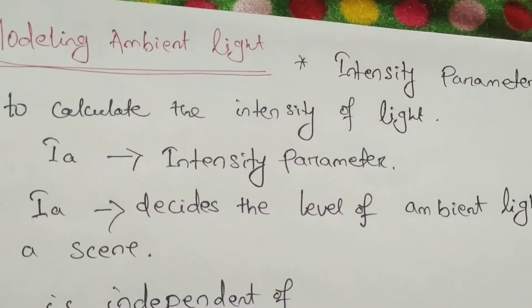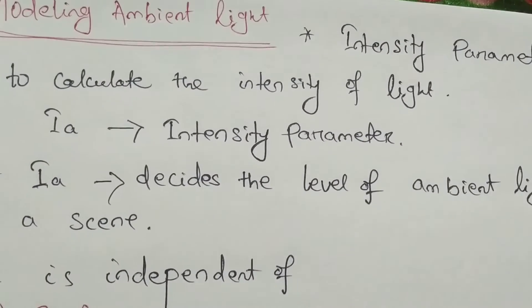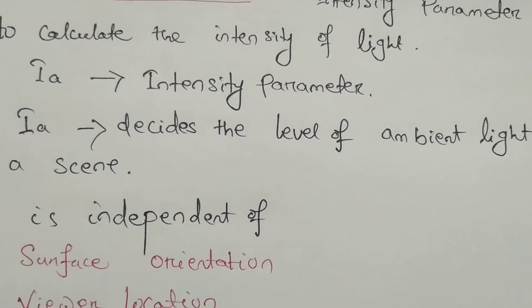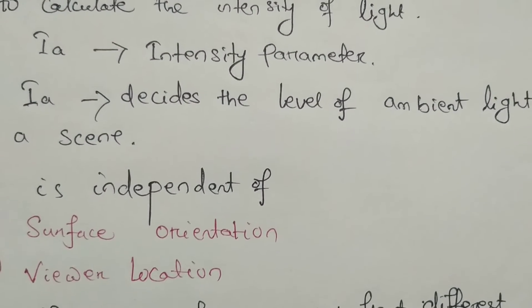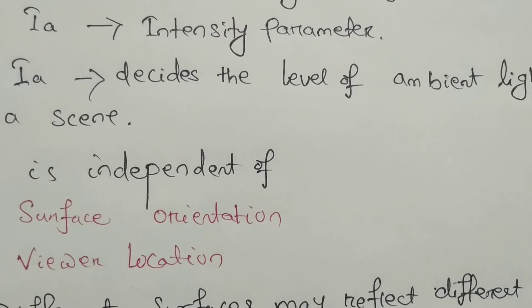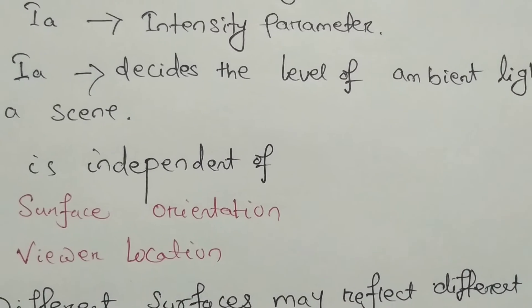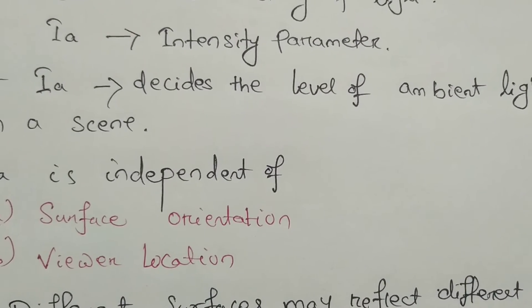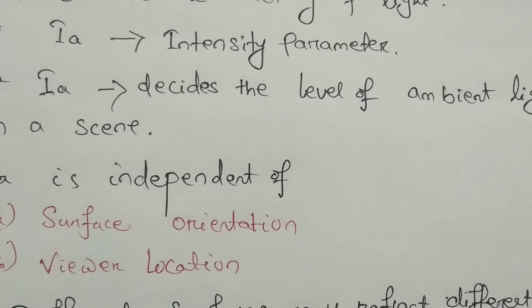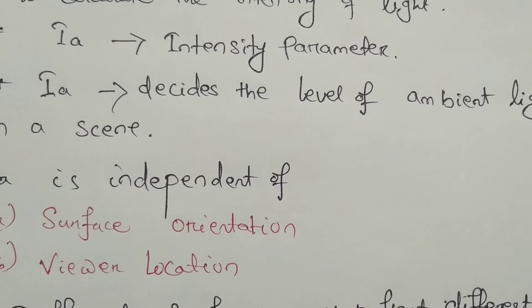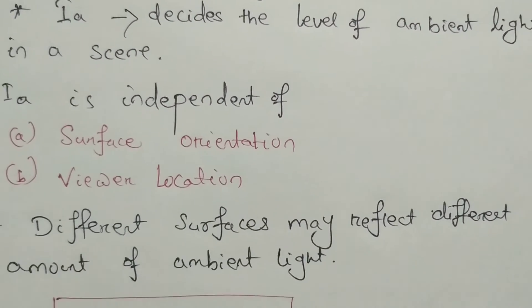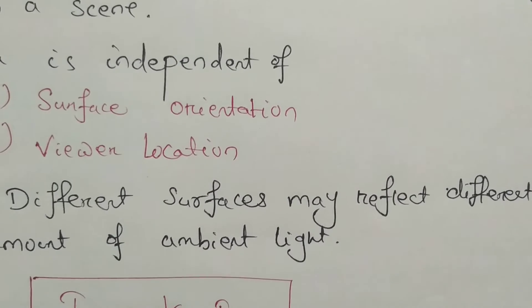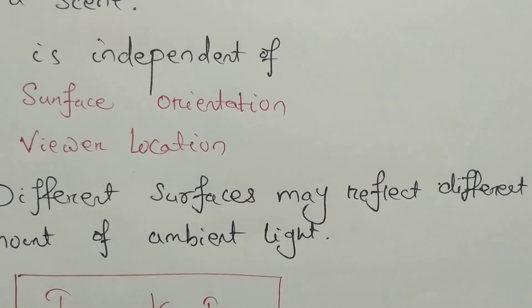Modeling ambient light: an intensity parameter is used to calculate the intensity of light, represented by Ia. Ia decides the level of ambient light in a scene. Ambient light is always independent of surface orientation — whatever may be the surface, shiny or clay — and of viewer location. Different surfaces may reflect different amounts of ambient light, and it can be represented by the equation: Ia = Ka · Ia, where Ka is the ambient constant.